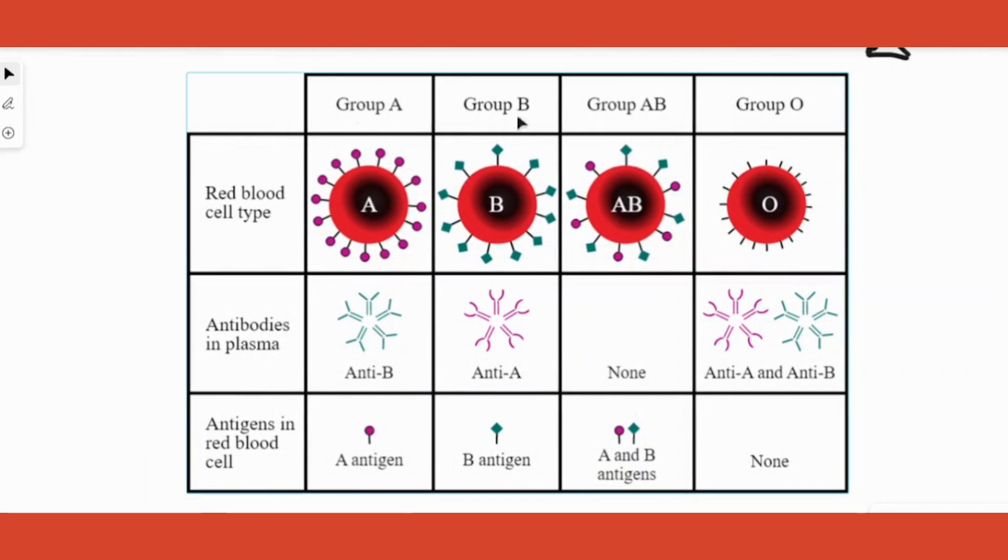As you know, in humans we follow the ABO system of blood grouping, wherein either the blood group is A or B or AB or O. So what determines that? It is determined by sugar polymers present on the plasma membrane of RBC in the person.